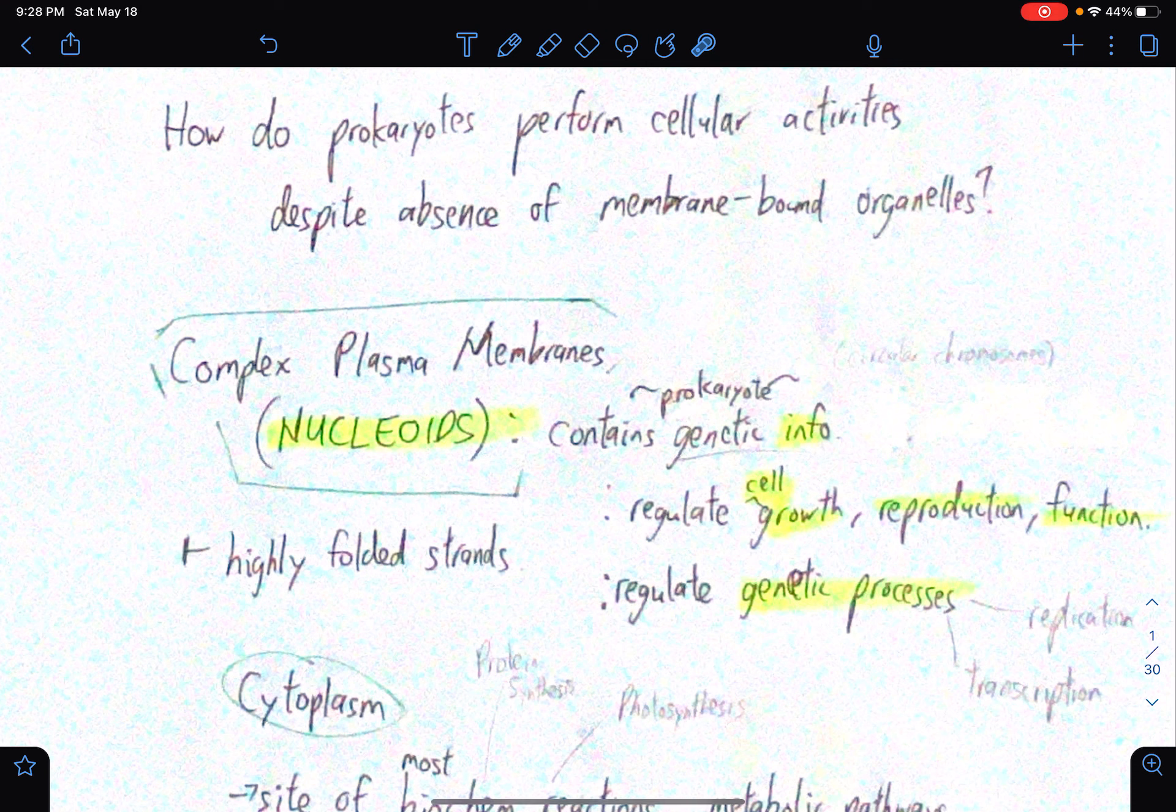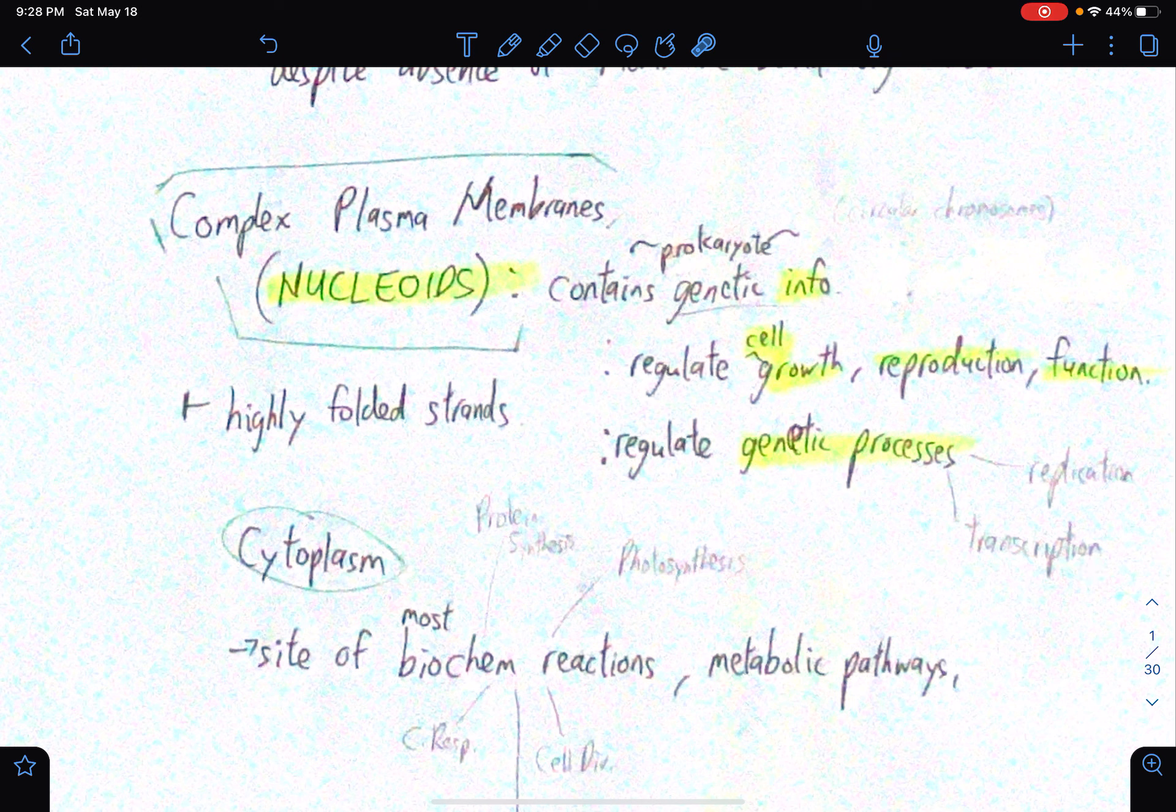So complex plasma membranes, in other words, nucleoids, they basically contain genetic information. So even if prokaryotes or bacteria in general usually lack membrane-bound organelles, they still have genetic information. It's usually stored in the nucleus. So nucleus is associated with the word nucleoid. And at the same time, the nucleoid regulates cell growth, reproduction, and function, as well as regulate genetic processes. So particularly replication and transcription. I think transcription comes first, then replication. More on this. Actually, I think this has already been tackled in the third quarter preparation video.